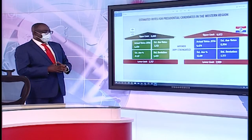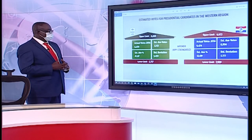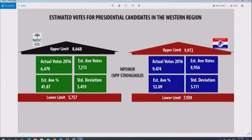In Nkwanta, another NPP stronghold, their estimated average is 52%, translating to 8,956 votes, but they actually had 9,474. NDC was at 41.87%, translating to 7,000 plus votes, but they only had 6,000 — dropping about 1,000 votes.